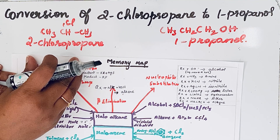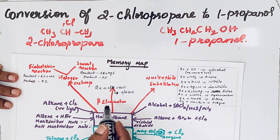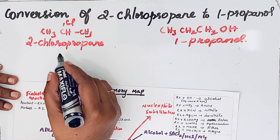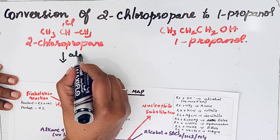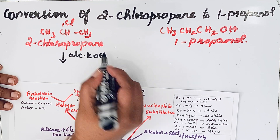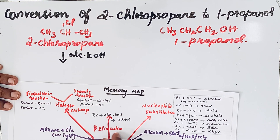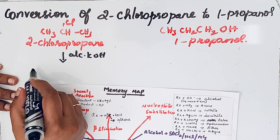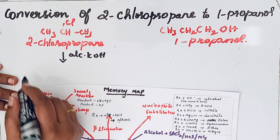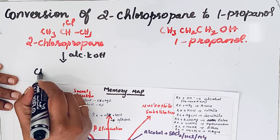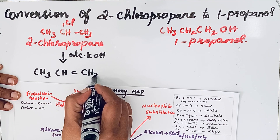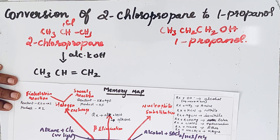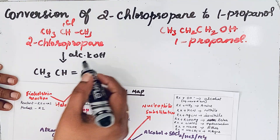So the first step: 2-chloropropane undergoes beta-elimination with alcoholic KOH. With alcoholic KOH and beta-elimination, we will get the alkene CH3-CH=CH2 (propene). So we have obtained the alkene.